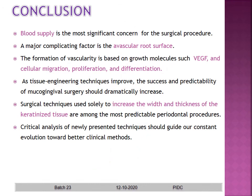To conclude, blood supply is the most significant concern for the surgical procedure. A major complicating factor is the avascular root surface. The formation of vascularity is based on growth molecules such as VEGF and cellular migration, proliferation, and differentiation. As tissue engineering techniques improve, the success and predictability of mucogingival surgery should dramatically increase. Surgical techniques aimed at increasing the width and thickness of keratinized tissue are the most predictable preliminary procedures. Critical analysis of newly presented techniques should guide our constant evaluation towards better clinical procedures.